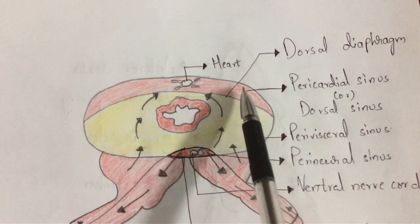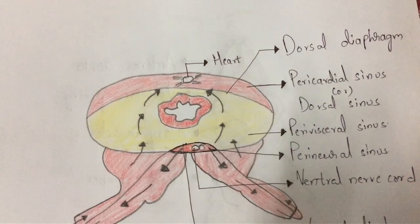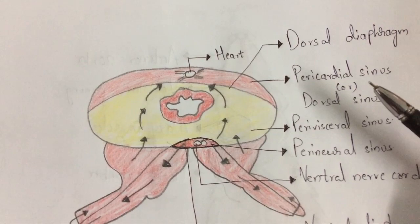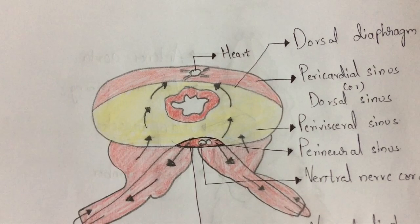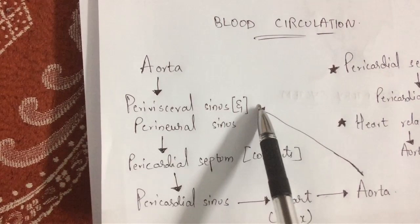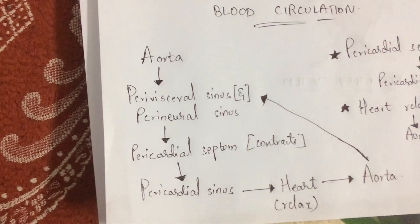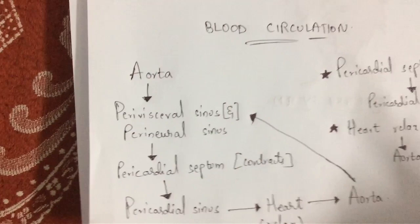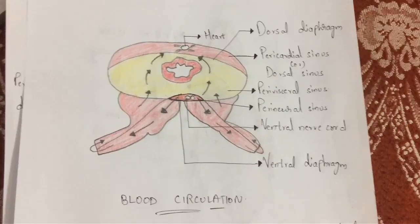When blood enters the heart, the heart undergoes relaxation, and the pericardial septum undergoes contraction — allowing blood to move from the pericardial sinus into the heart. When the heart relaxes, blood moves toward the aorta again, restarting the cycle: aorta → perivisceral and perineural sinuses → pericardial sinus → heart. This is how blood circulation takes place in Periplaneta americana. This system is referred to as the tracheal system.